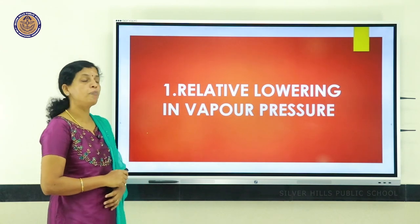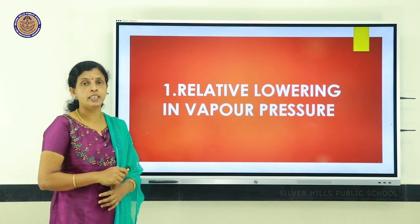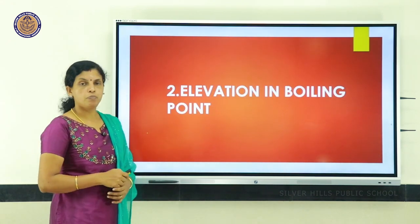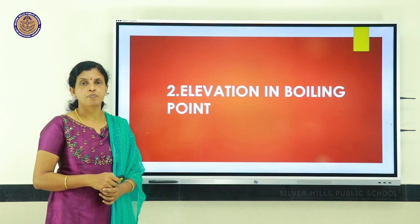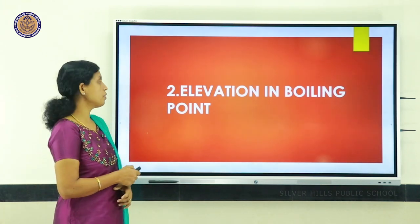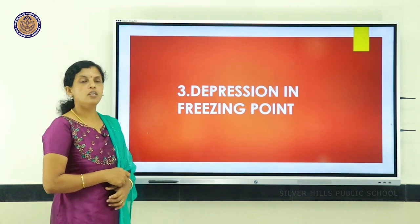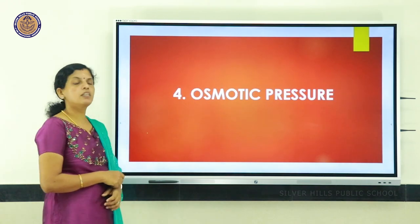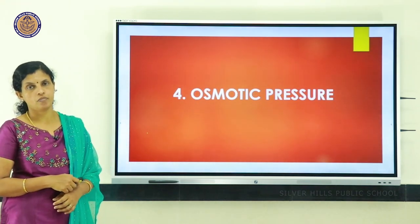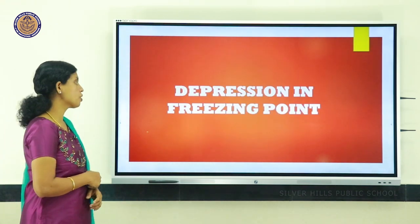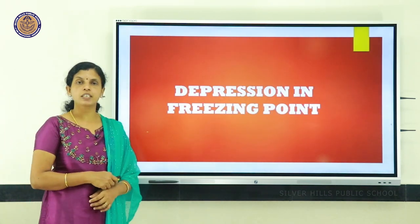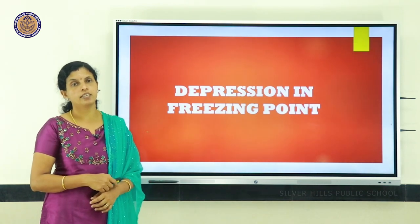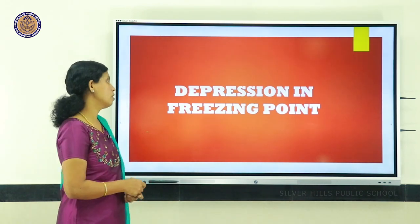The four important colligative properties are: relative lowering in vapor pressure, elevation in boiling point, depression in freezing point, and the fourth one, osmotic pressure. In this session, we are discussing about the third colligative property, depression in freezing point.